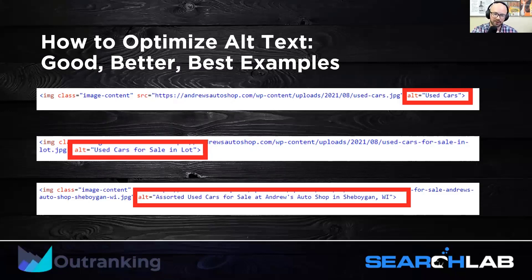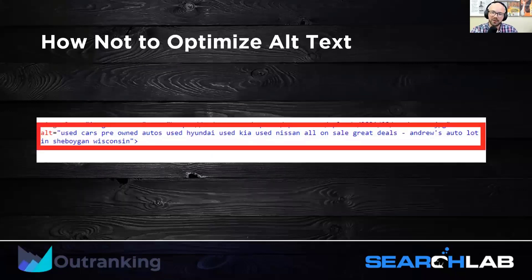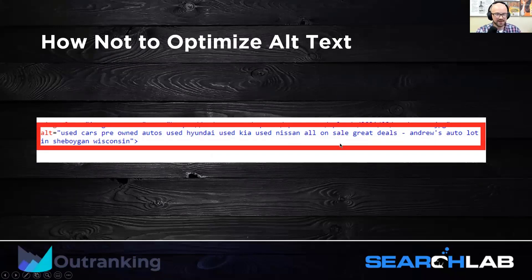What you don't want to do is write alt text that reads like stream-of-consciousness writing: 'used cars, pre-owned autos, used Hyundai, used Kia, used Nissan.' While all of that is accurate, it's not readable, it's not conversational for users, and it's way too long. Make your alt text short and sweet, but comprehensive enough to describe the image.